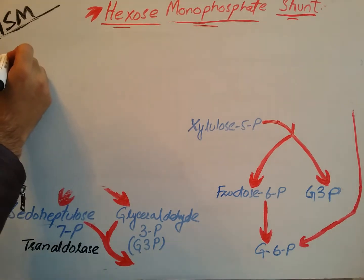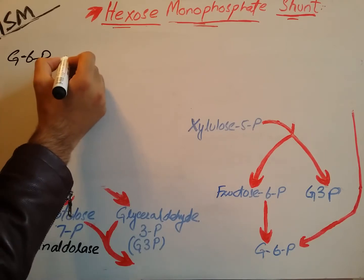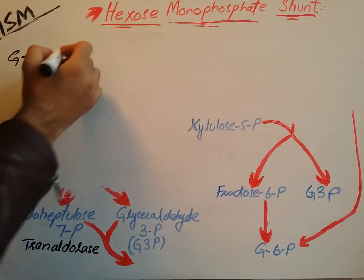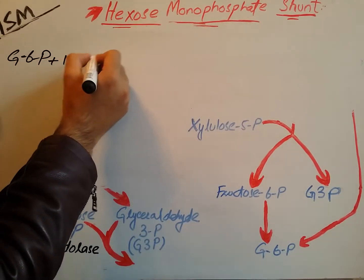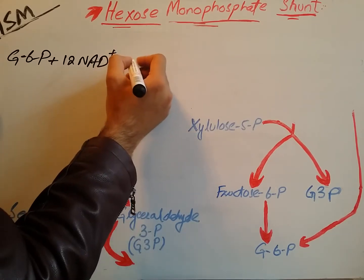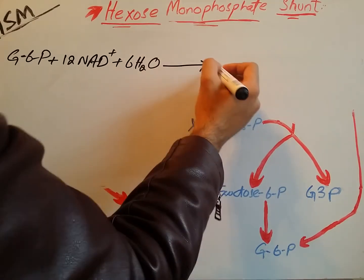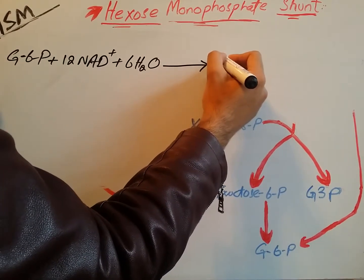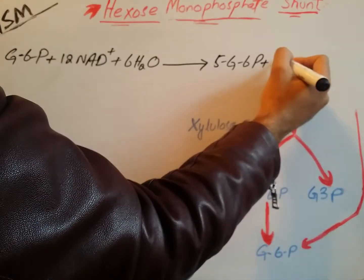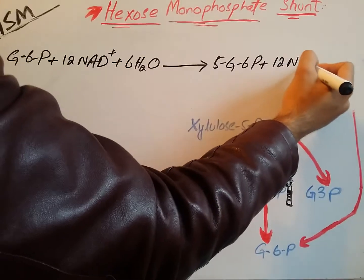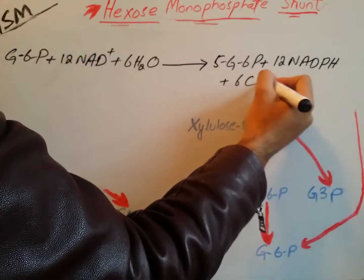In a quick overall view: glucose-6-phosphate reacts with 12 molecules of NADP⁺ and 6 molecules of water to yield glucose-6-phosphate plus 12 molecules of NADPH and 6 molecules of carbon dioxide. This summarizes the complete hexose monophosphate shunt pathway.